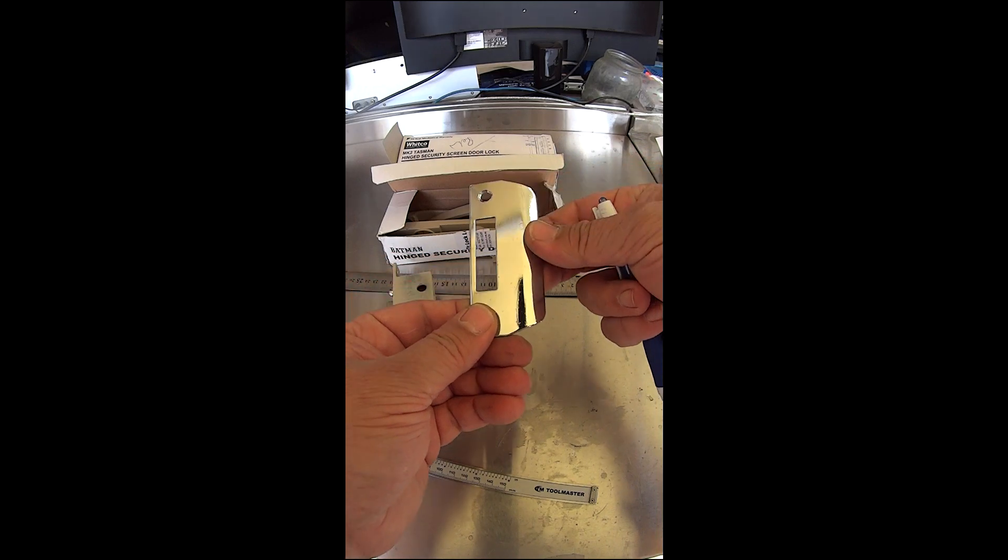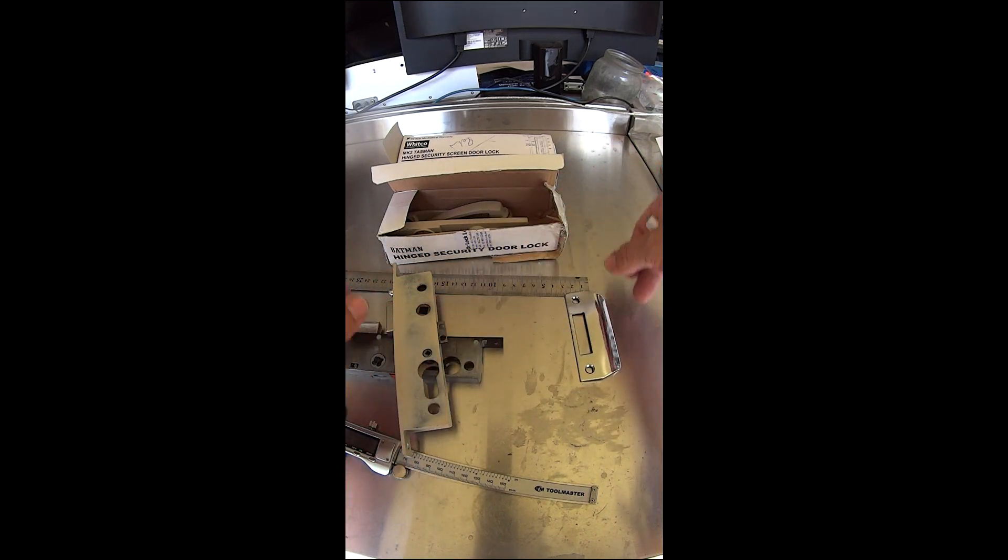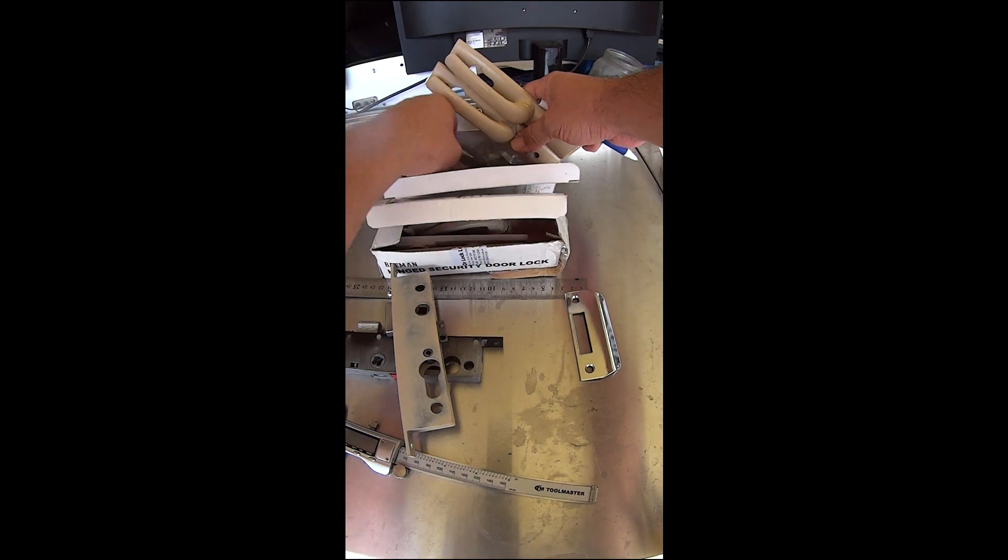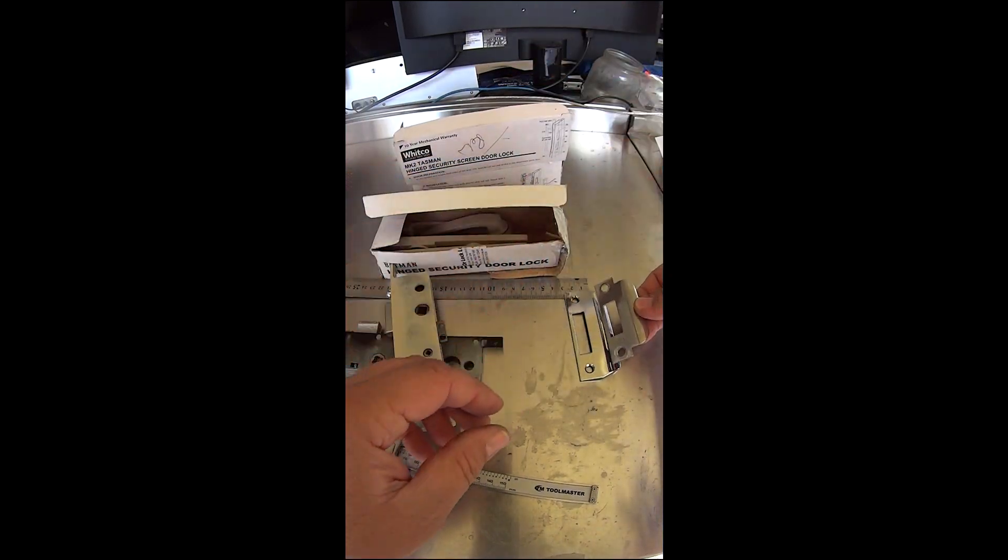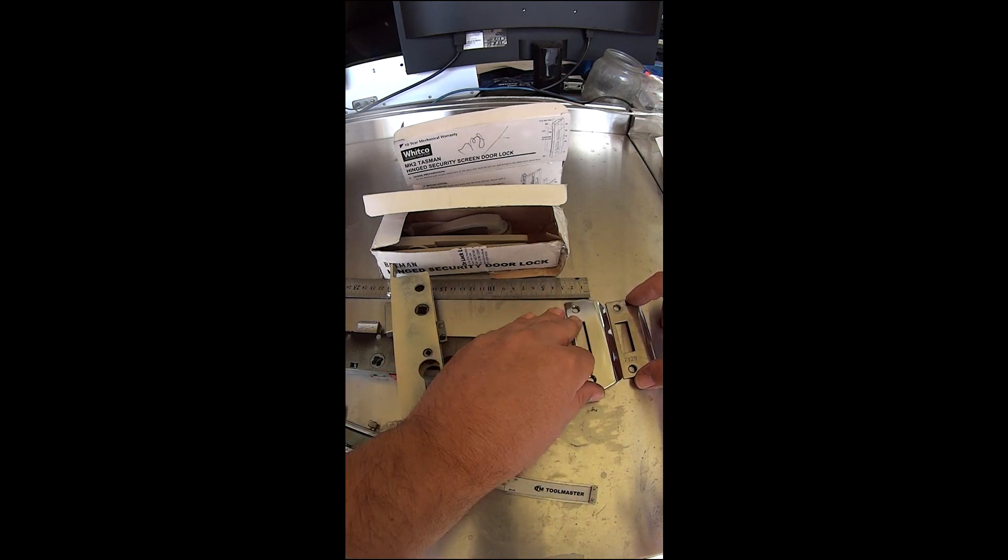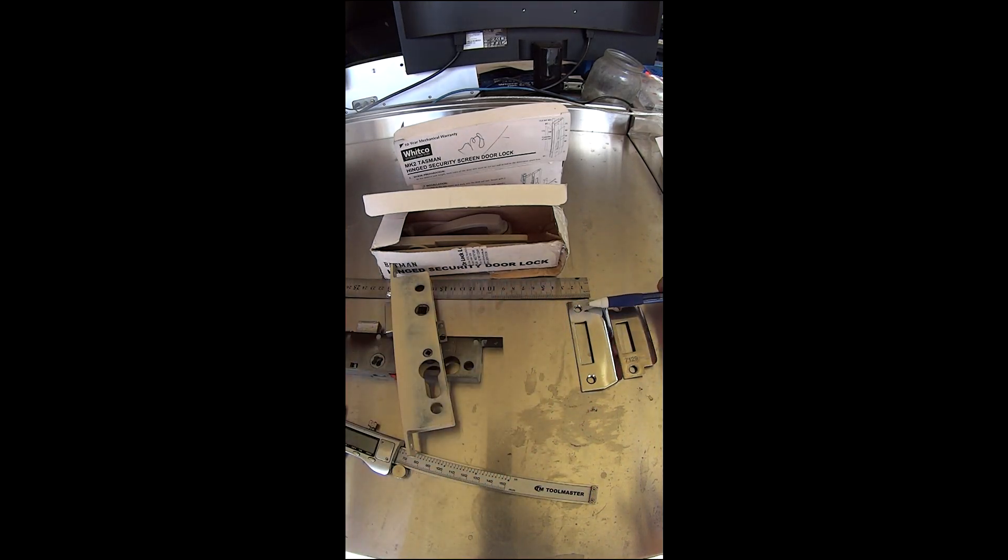This is a Batman one here, as you can see it's a lot larger. The Witko one is a lot smaller. Looking at those two side by side you can see the screw holes are different and they're different lengths.